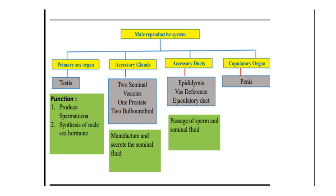This picture shows the components of the male reproductive system with their important functions. Primary sex organ is the testis; its main function is to produce sperm and synthesize male sex hormones. Accessory glands include two seminal vesicles, one prostate gland, and two bulbourethral glands; their function is to manufacture and secrete seminal fluid. Accessory ducts — epididymis, vas deferens, ejaculatory ducts — function as passage for sperm and seminal fluid, whereas the penis acts as a copulatory organ.